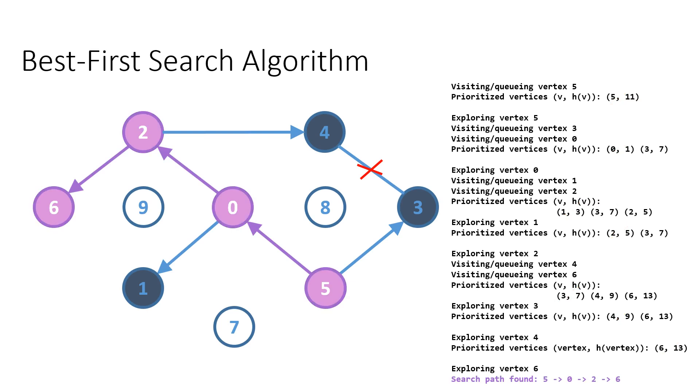we recognize that vertex six is actually our target entity. And now we can backtrack from six all the way to the starting vertex, vertex five, and reconstruct our search path as five, zero, two, and six.